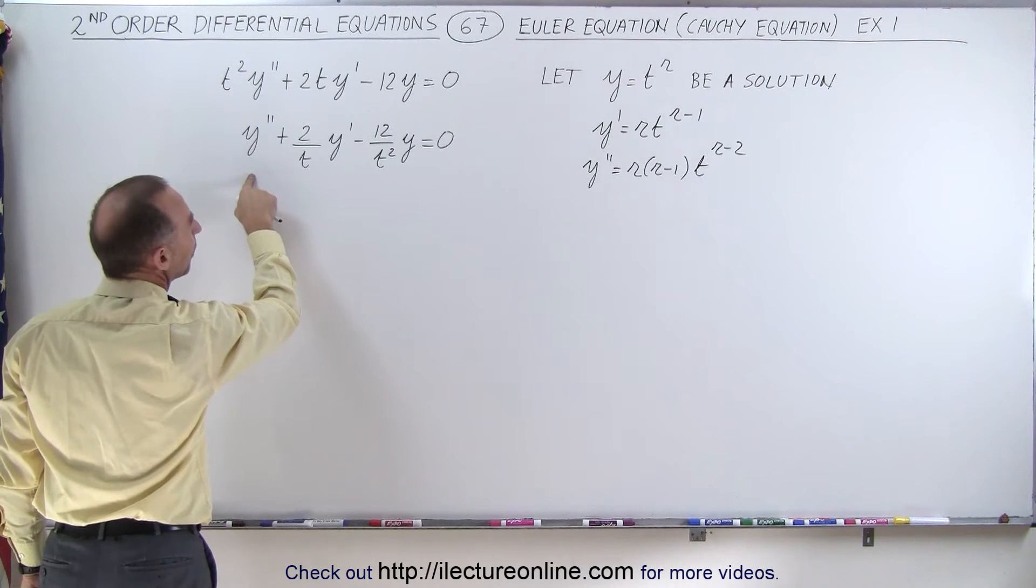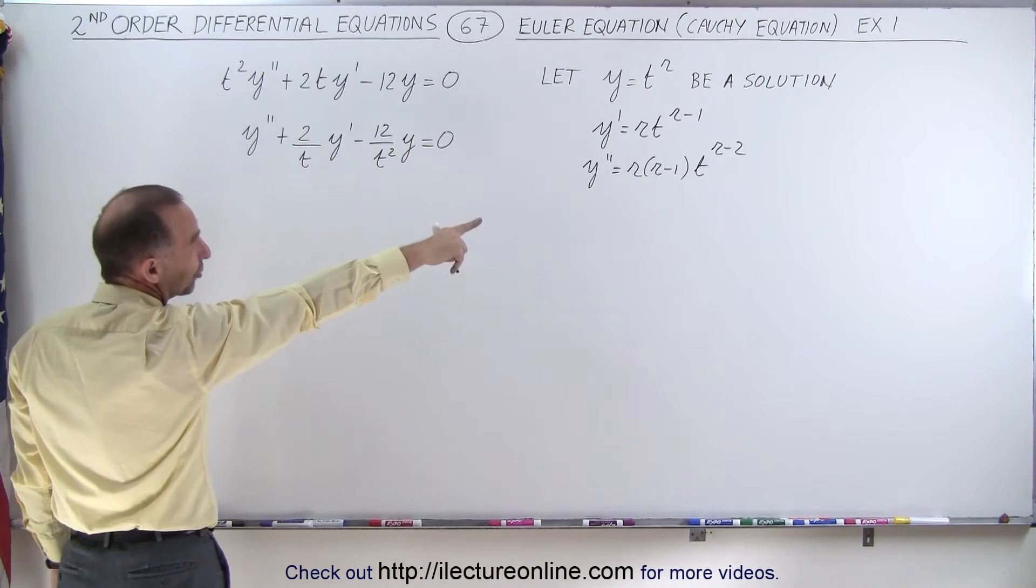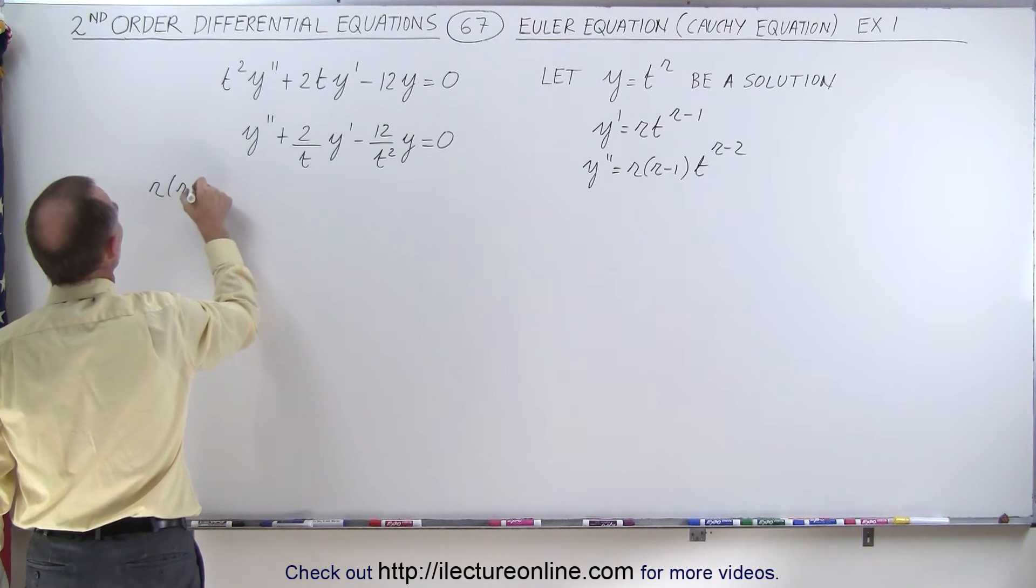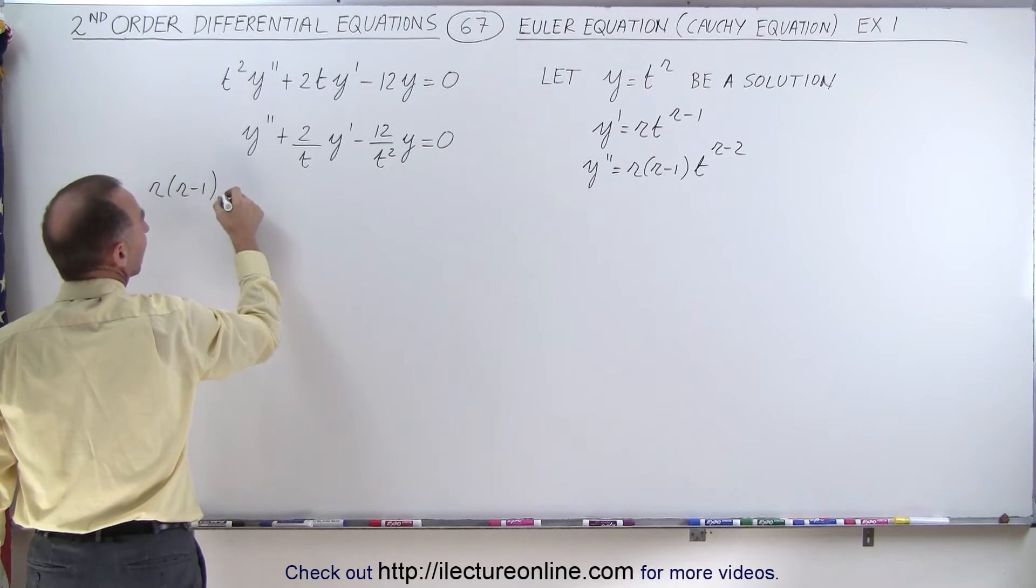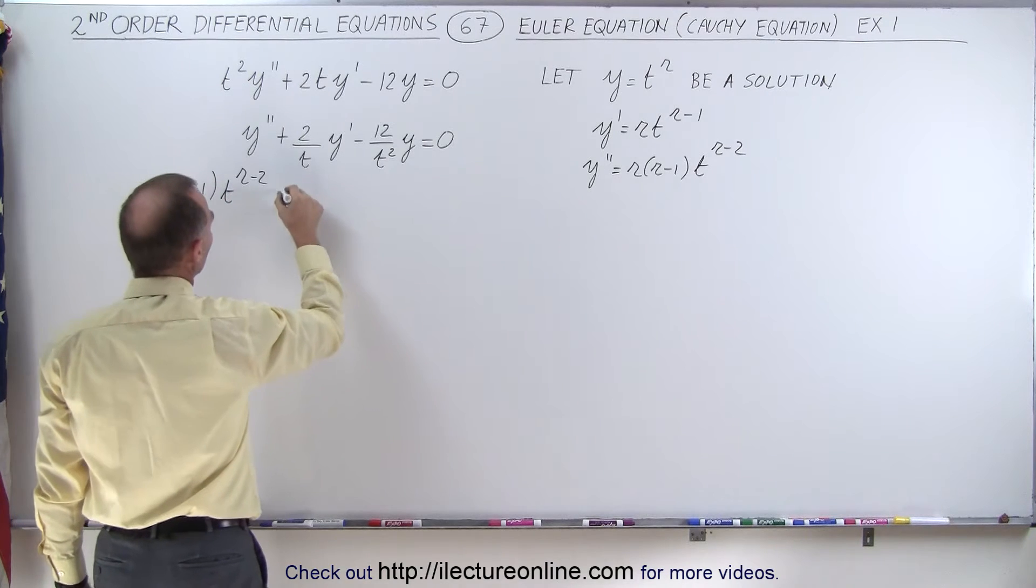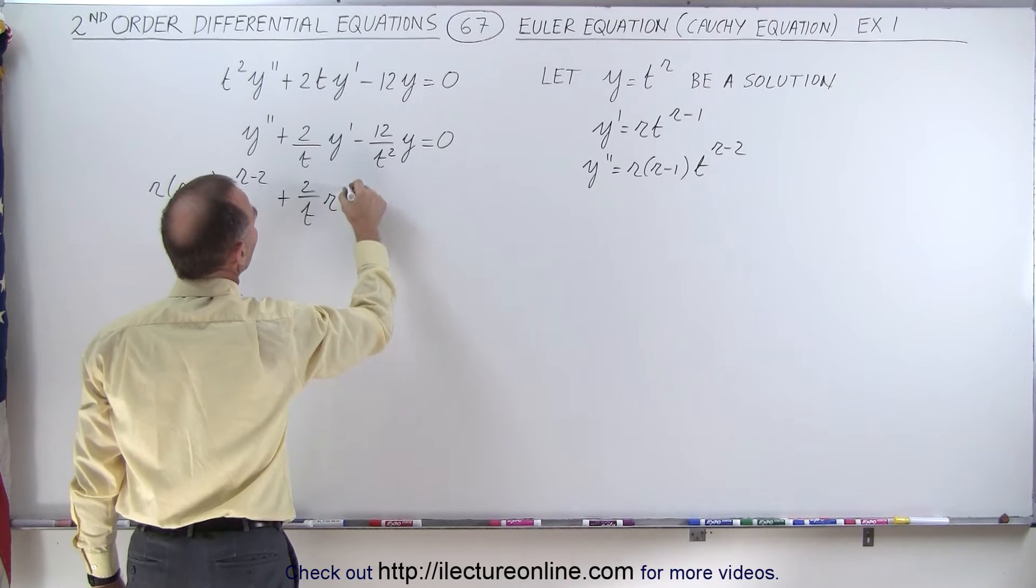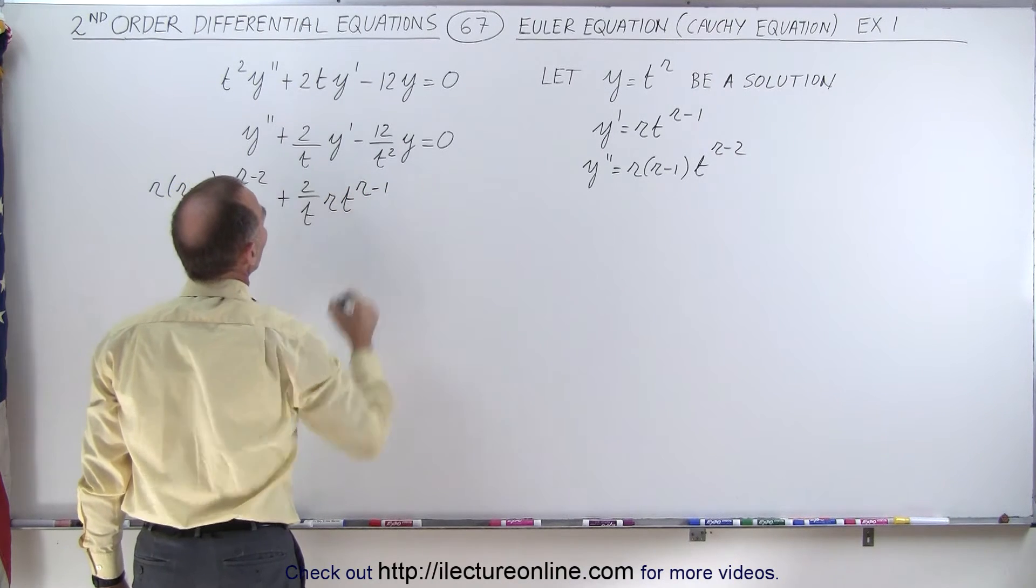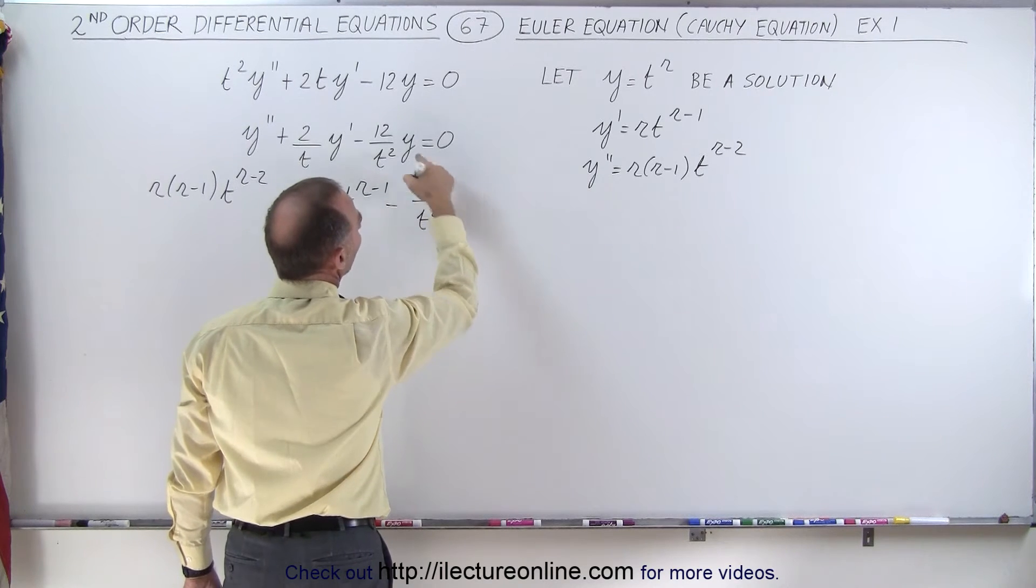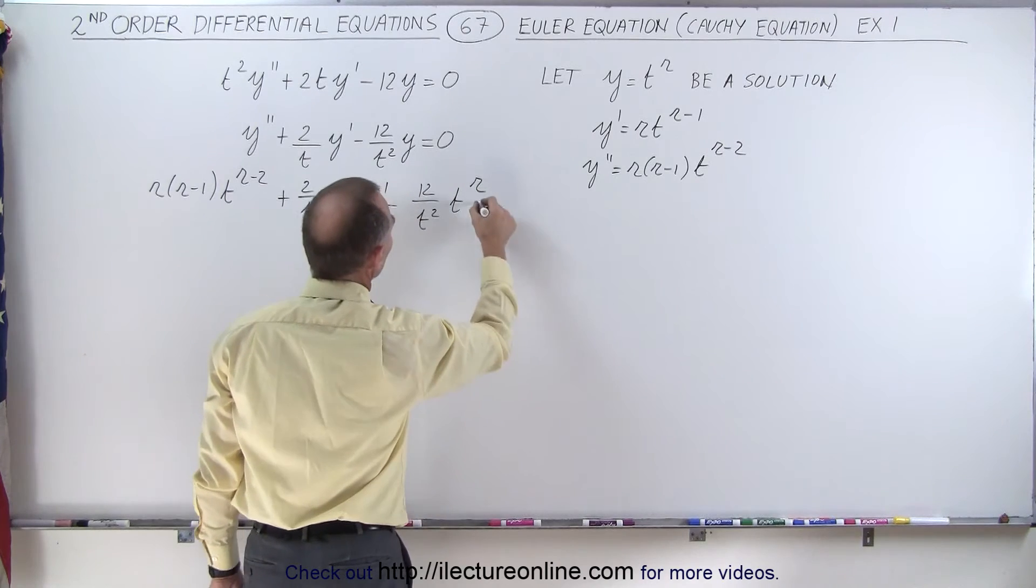So for the y double prime, we end up with r(r-1)t^(r-2) plus (2/t) times y prime, which is rt^(r-1), and then minus (12/t²), and y would be simply t raised to the r power. And that will be equal to zero.